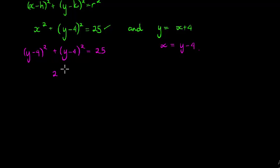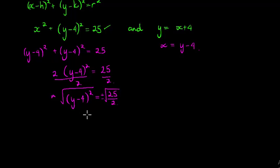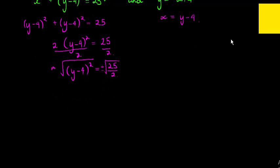That means I've got 2(y - 4)². I don't even have to multiply out these brackets. I can divide both sides by 2, so now I'm left with (y - 4)² = 25/2. Now I can take the square root on both sides, so y - 4 = plus or minus √(25/2).